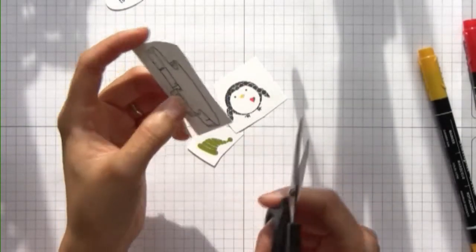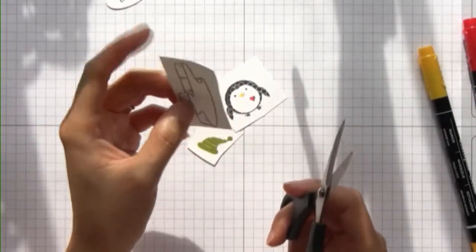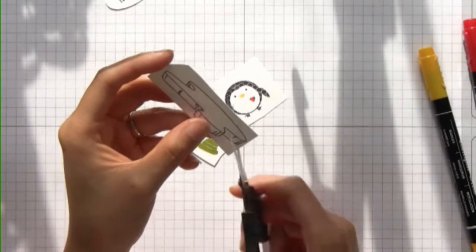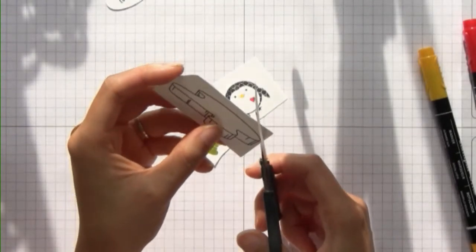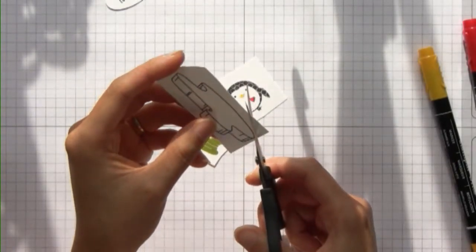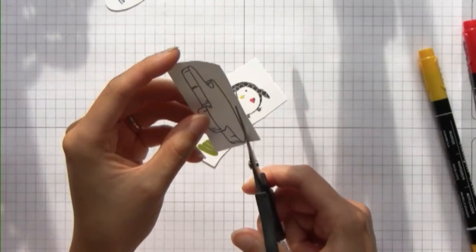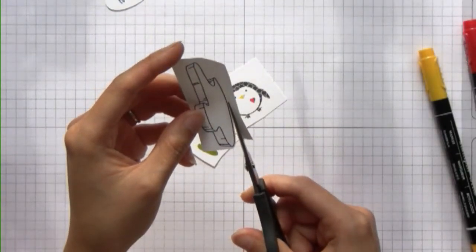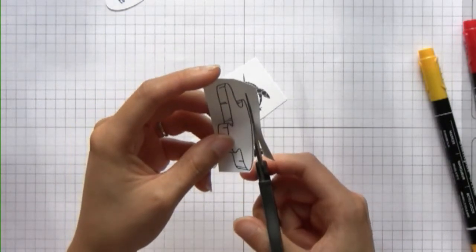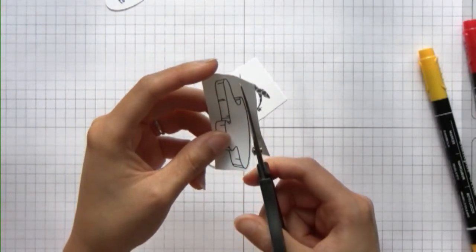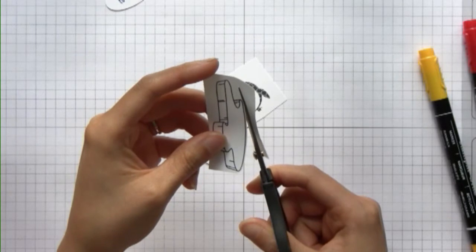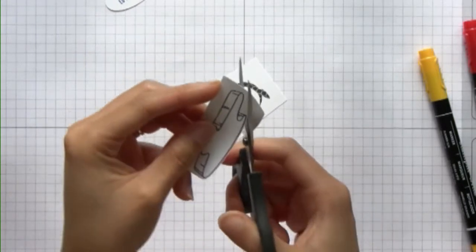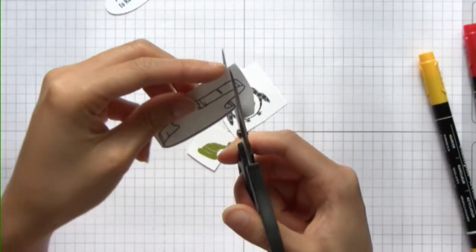The trick to cutting out stamped images nicely and easily is to move your paper more than you're moving your scissors as you're cutting. And I never go all the way to the end of the scissors.